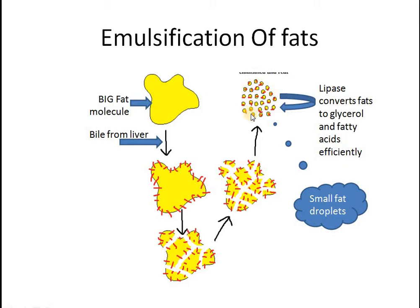Why is emulsification done and why is it important? There is an enzyme called lipase. Lipase has the function of converting fats into glycerol and fatty acids. Fats are actually made up of glycerol and fatty acids. So whenever you eat fat, it cannot be utilized in your body until it is changed into these simpler components — glycerol and fatty acids — by the enzyme called lipase.